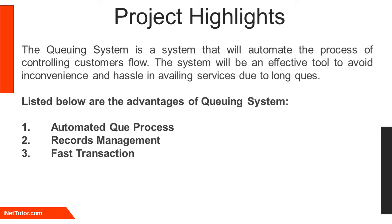Listed below are the advantages of the queuing system. 1. Automated queue process: the system will allow automated management of long lines of customers. 2. Records management: it is a database system which makes the queue list electronic, safe, accurate, reliable, and fast. 3. Fast transaction: the system will allow the completion of customer service and transactions to be easy and fast.